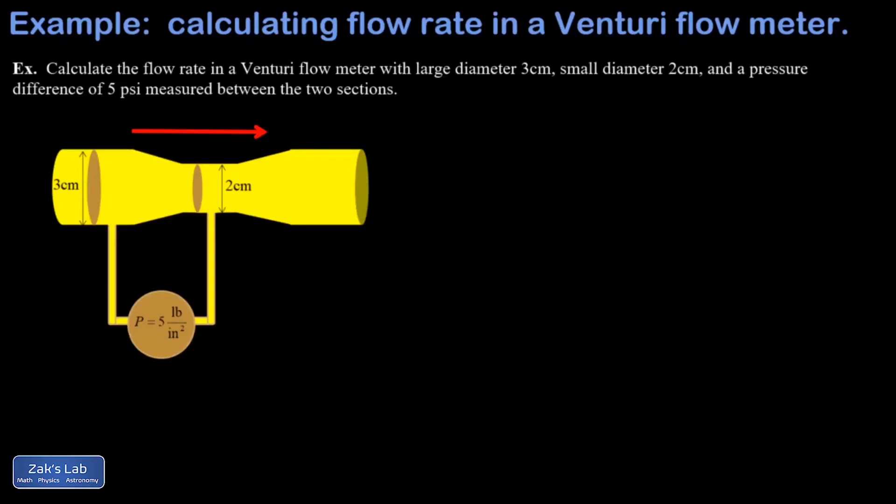In this video we're analyzing a device called a venturi flow meter. Here's the idea: if you want to measure the liquid flow in a pipe, you can just put a constriction in the pipe so it's just a little bit narrower here.